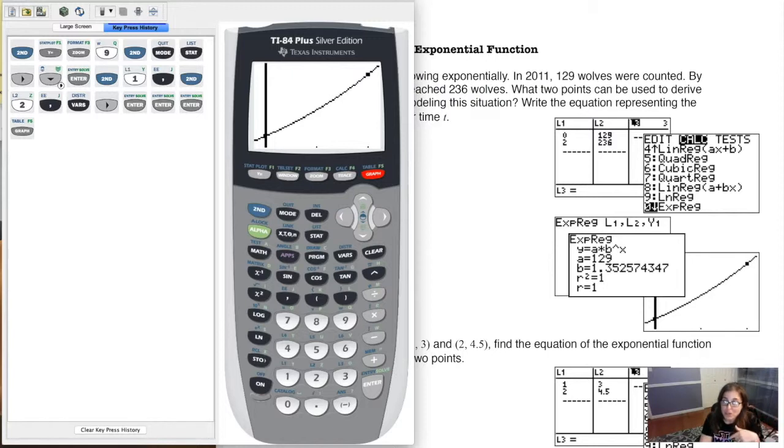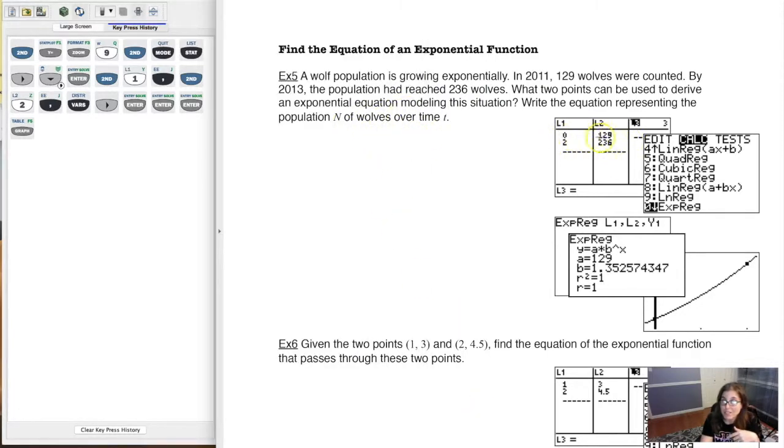So we're going to move on to example six, where instead of giving you an initial value, like I did here with the y-intercept, I'm just going to give you two ordered pairs. I'll see you in a bit.